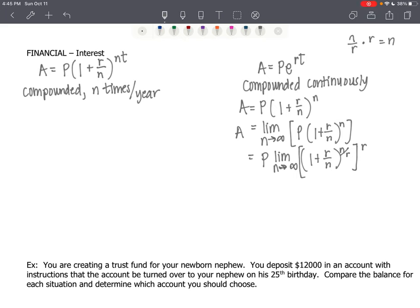Now 1 plus R over N. If I say, let's let N over R equal X, then I have P times the limit as N approaches infinity of 1 plus, if N over R is X, R over N is 1 over X. N over R is X. And then that's raised to the R power.